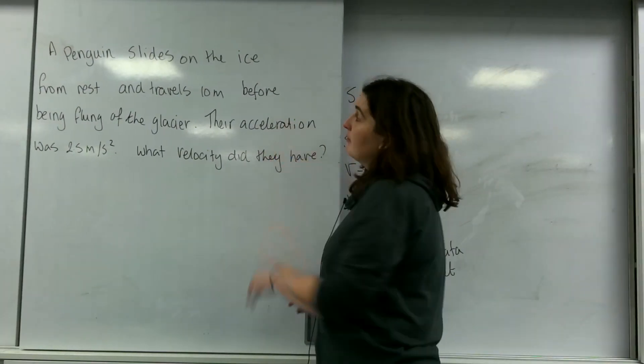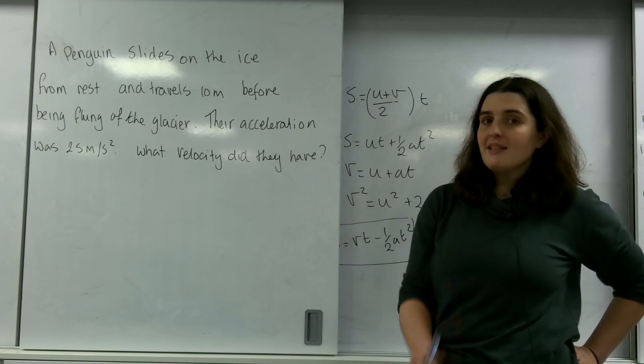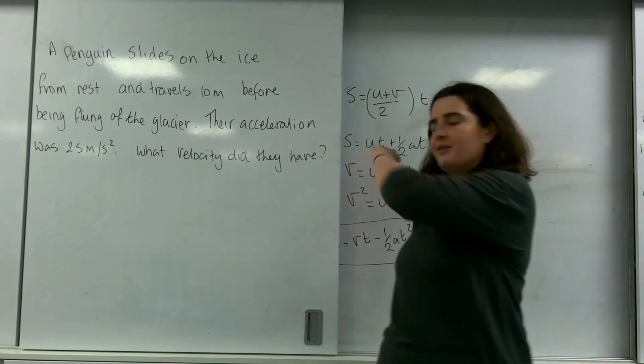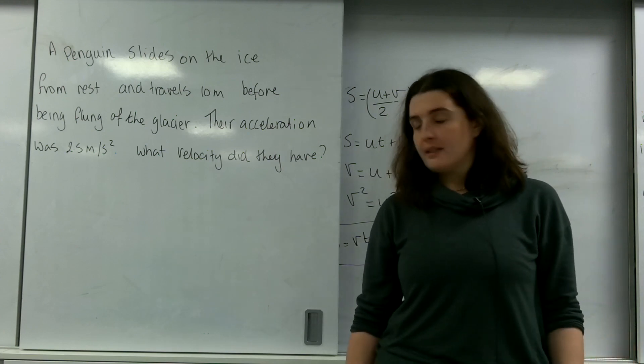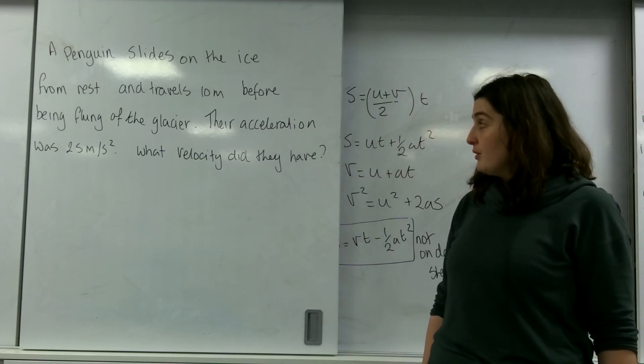I've got a penguin sliding on the ice from rest and travels 10 metres while being flung off the glacier. Their acceleration was 2.5 metres per second squared. What velocity did they have?